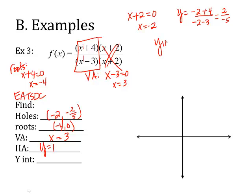And then the y-intercept. I take what's left of the equation and put in zeros for x. So 0 plus 4 over 0 minus 3 gives me 4 over negative 3, so negative four-thirds. Remember, that's negative 1 and one-third.